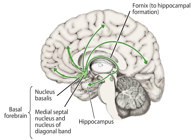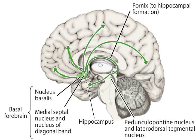A smaller group of cholinergic cells in the pedunculopontine and laterodorsal tegmental nuclei project to the reticular formation and thalamus and are believed to be involved in arousal and the sleep-wake cycle. Cholinergic systems in the cortex are crucial for learning and memory, and widespread loss of these cells is a characteristic of Alzheimer's disease.